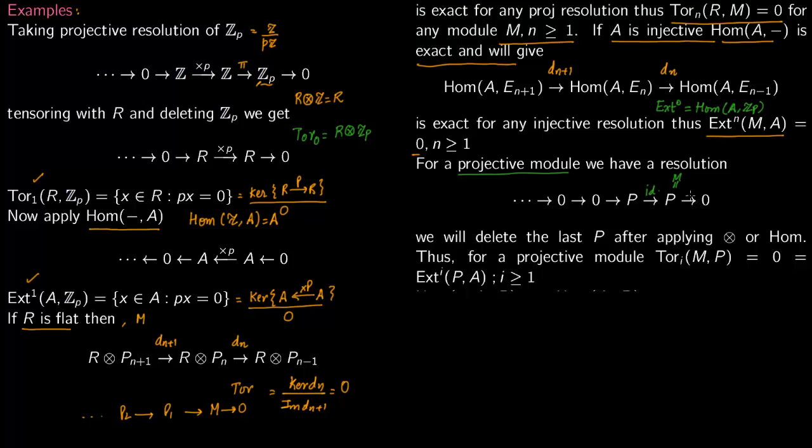So this P is the module which we are setting as M. You set M as P, and this is the resolution you have. Now after that we said, you delete M. You delete M, what you get is nothing but these zeros here: 0, 0, P, 0.